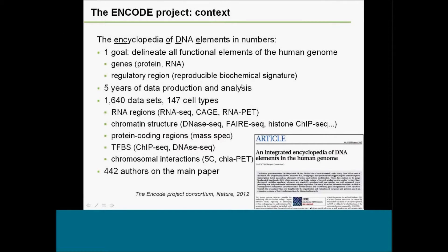For instance, if doing a ChIP-seq experiment and you have a consistent signal across replicates in different cell lines, then you would consider that region functional. For a couple of years, the whole consortium has been running many experiments and analyzing a lot of data. Broadly, you have transcriptome analyses, chromatin structure experiments, protein-coding region identification by mass spec, transcription factor binding sites by ChIP-seq, and chromosomal interactions by 5C.